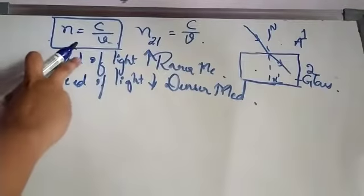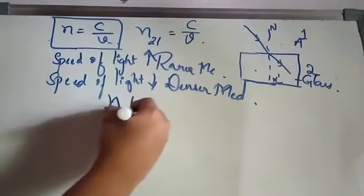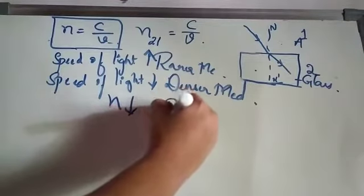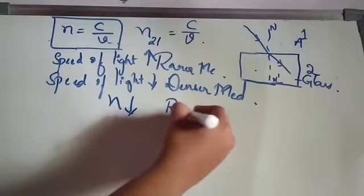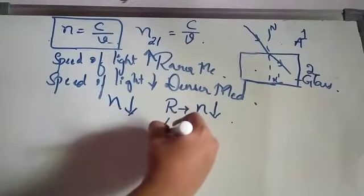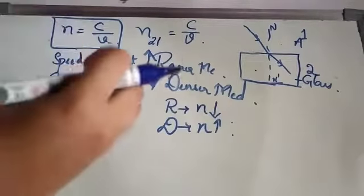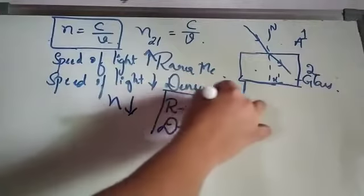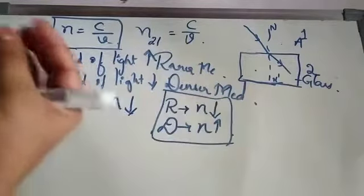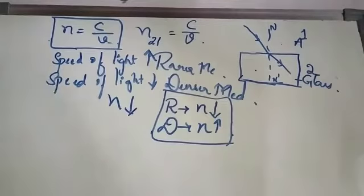If the speed of light is more — that is, in the rarer medium — then that medium's refractive index will be less. This is very important: refractive index is less in a rarer medium and more in a denser medium. By this, you can identify which medium is rarer and which is denser. More refractive index means denser medium; less refractive index means rarer medium.